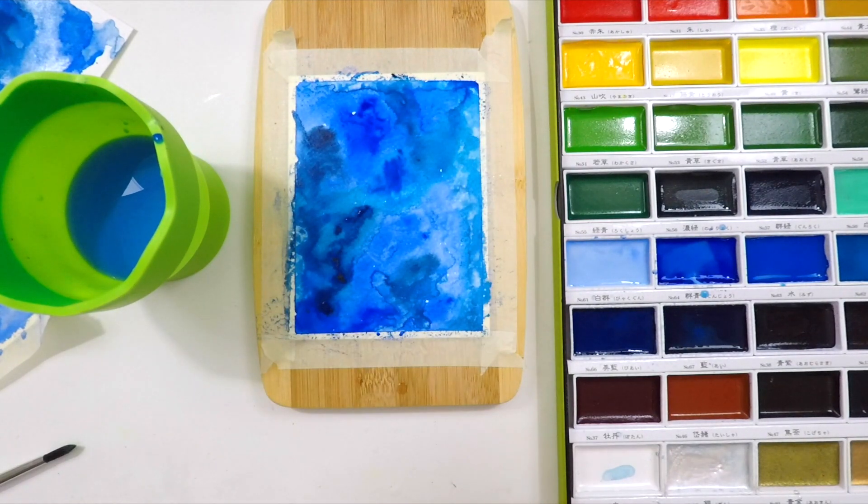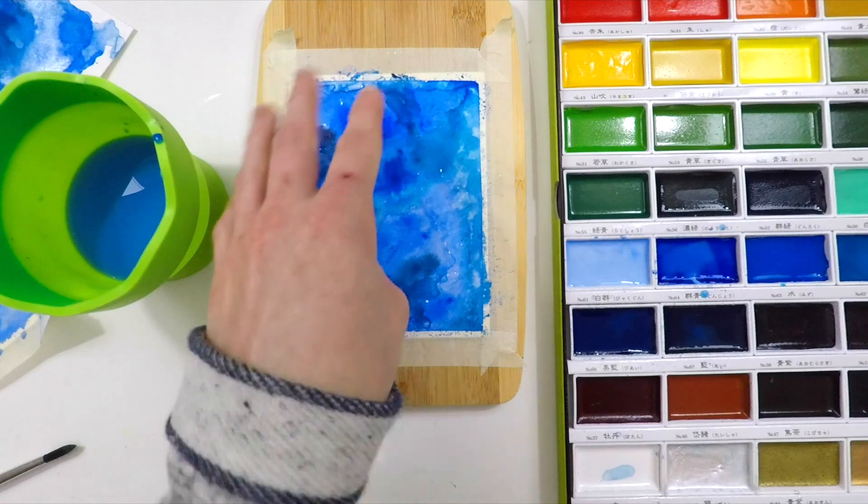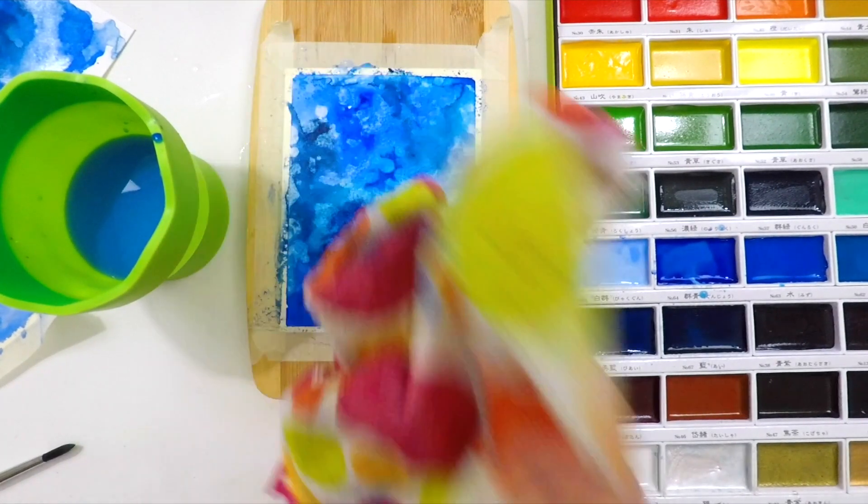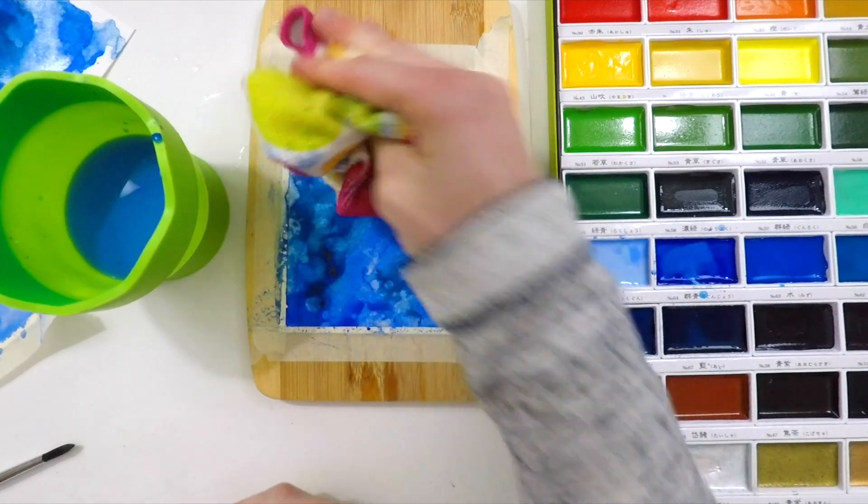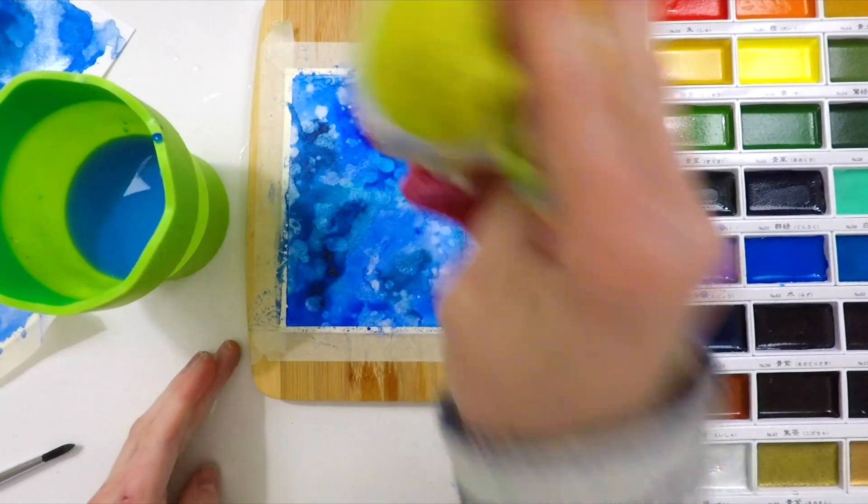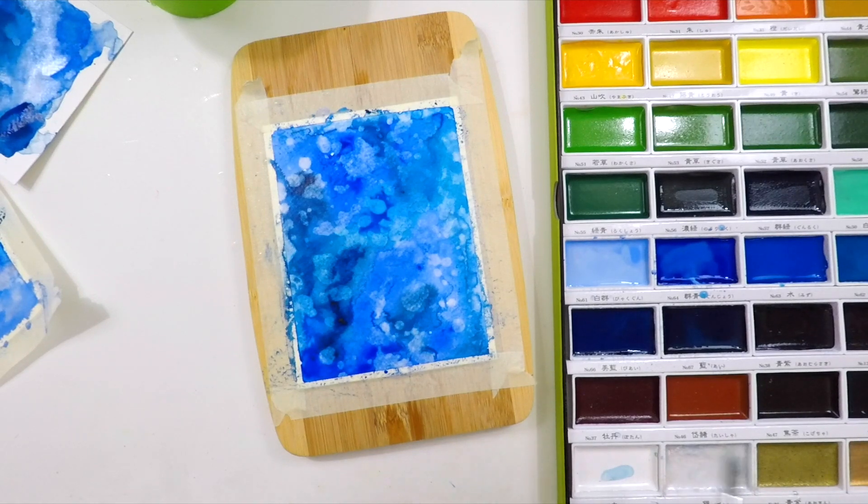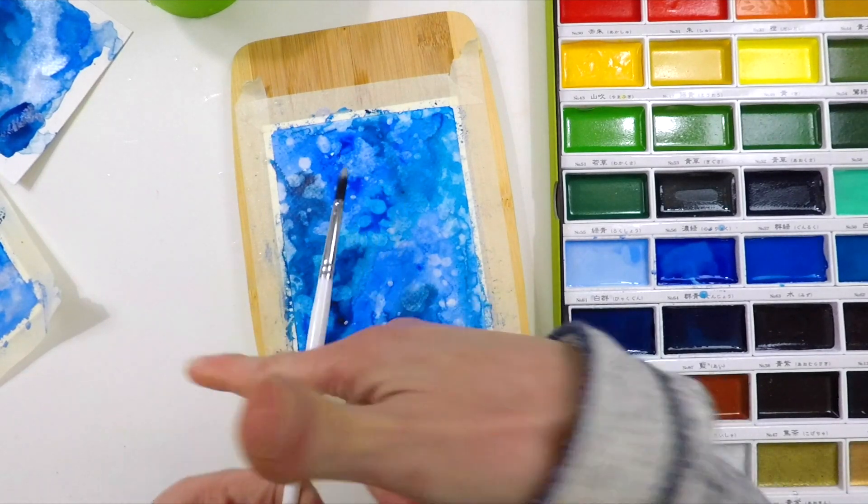Gansai Tambi watercolors do react when you apply water on top of them. They're a very reactive pigment, so I can apply water droplets on top of my painting to get some texture. This looks really cool, especially when doing underwater or galaxy type backgrounds. It's really fun to add those splatters.